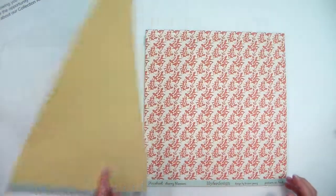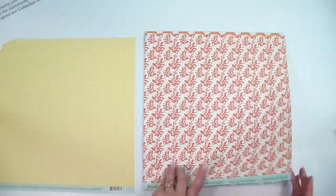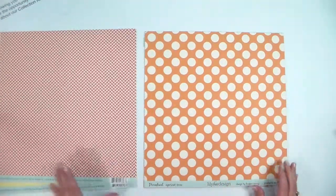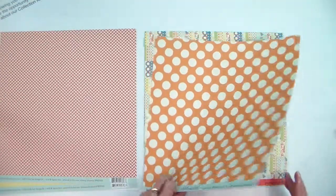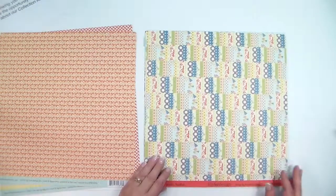We always start with a manufacturer's line of products. We will either buy the kits pre-packaged like we've done in this case or we will pick and choose the papers that we're going to use and then we bring in the coordinating embellishments that match that line.